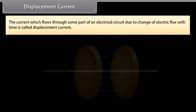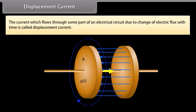Displacement current. The current which flows through some part of an electrical circuit due to change of electrical flux with time is called displacement current.